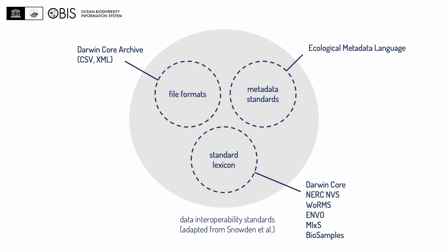This diagram summarizes our interoperability standards, which fit into three categories: file formats, metadata standards, and standard lexicon. The file format we use for exchanging data within the network is Darwin Core Archive. For metadata documents, we use Ecological Metadata Language, or EML. And for standard lexicon, we rely on vocabularies and ontologies such as Darwin Core, ENVO, and MIxS.